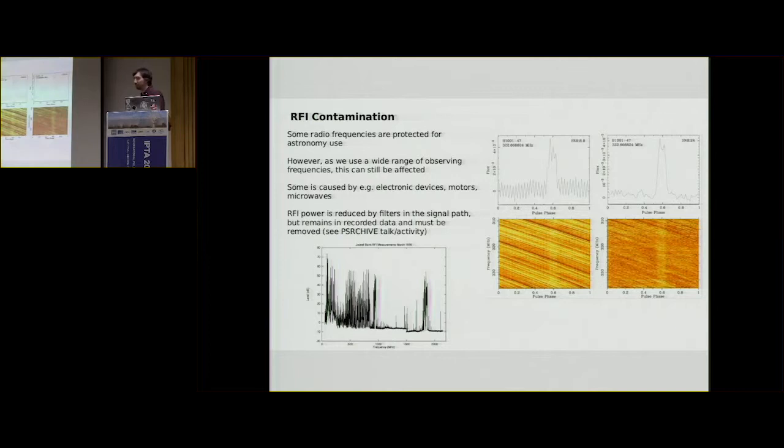But you have this horrible oscillating baseline, and it really impacts the precision to which you can do science. So on the right-hand side, it's the same observation, but with some RFI masks employed. You can see there's still something going on there. It's not been removed perfectly, but it's much better. The signal-to-noise has increased from 9 to 24 in this case.